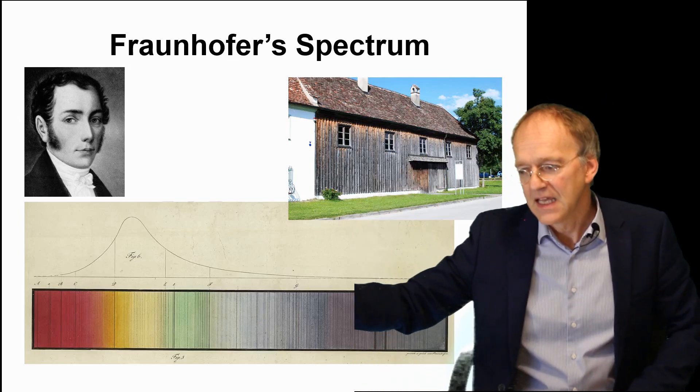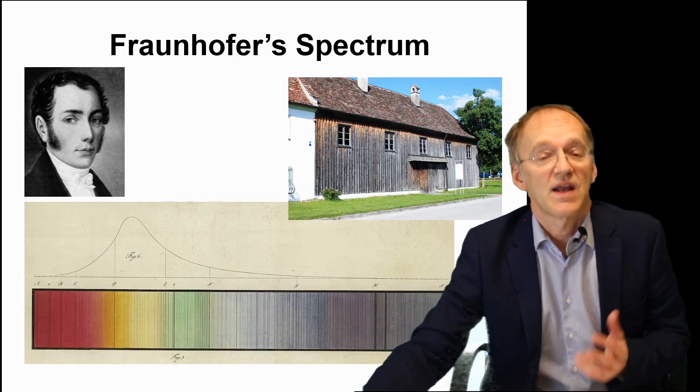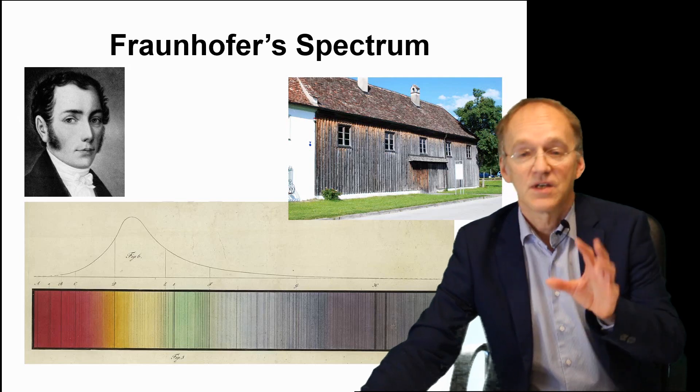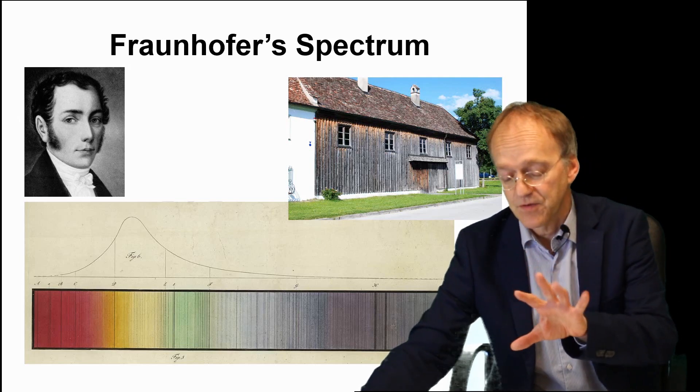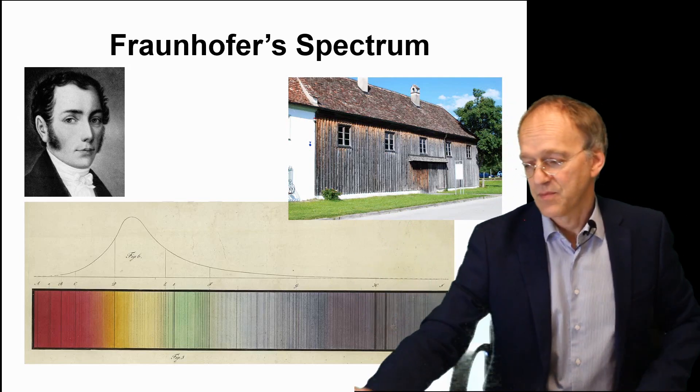Only 50 years later it was discovered by Kirchhoff that these black lines were actually fingerprints of given atoms located above the solar atmosphere that absorbed and remitted light, as in our little experiment before.